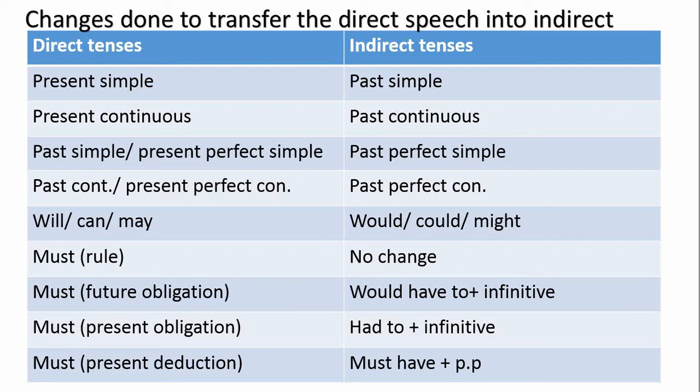Concerning 'must', it's a little bit different. For 'must' as a rule — for example: 'He said, you must park in the parking area.' It's a rule, so there will be no change: 'He said that I must park in the parking area.' The only change is the pronoun — 'you' changed into 'I'. For 'must' as future obligation: 'She said, I must finish my project tomorrow.' When we change it: 'She said that she would have to finish her project the following day.' For present obligation: 'She said, I must study for the exam' → 'She said that she had to study for the exam.'